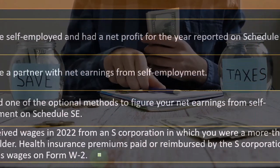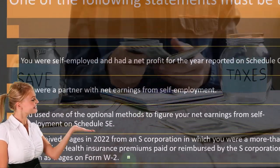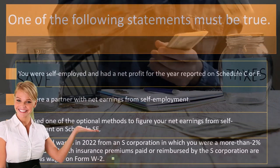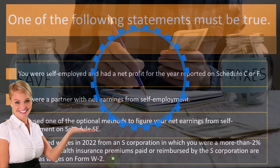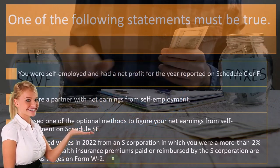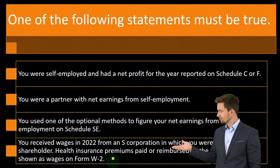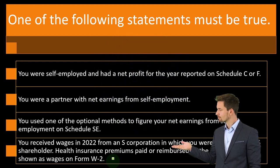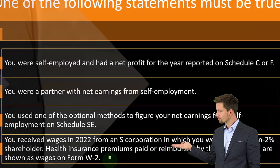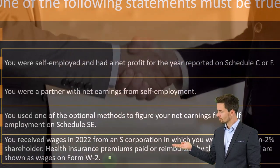With an S corporation, you're effectively forced to pay yourself wages, and then you might have the health insurance situation with regards to paying yourself those wages, so it gets a little tricky. When dealing with business tax returns, clients will inevitably ask: am I in the ideal business entity? Should I be a sole proprietorship, an LLC, or a partnership?